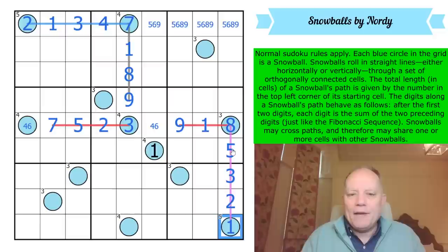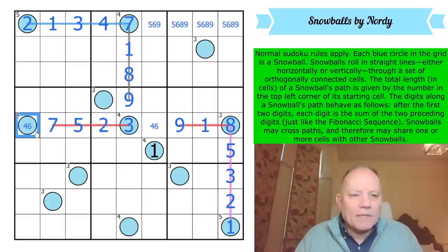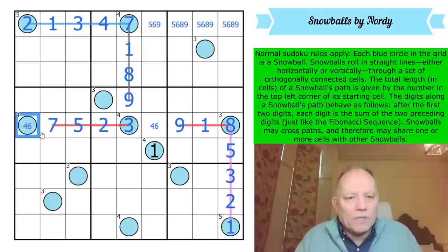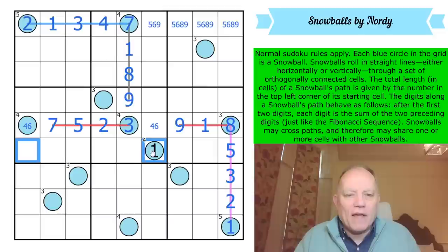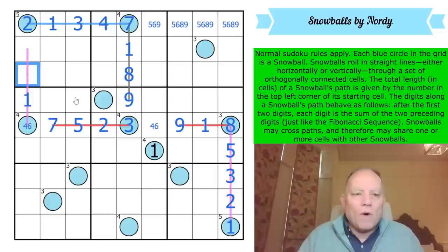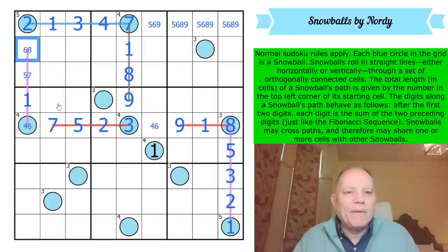That's a 4-6 pair. We can finish: five minus three is two, three minus two is one. Coming back to the left-hand snowball - 4 or 6. Could it be 6? The sequence would have to go 6, 1, 7, 8. We've had a 2 in the column. Can't go 4, 3, 7, 10. So the next digit after this snowball is a 1, which can't go there because of the given digit, so it must go north. This is either 4, 1, 5, 6 or 6, 1, 7, 8.